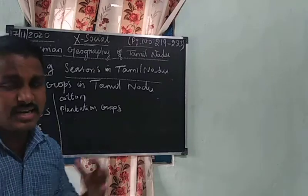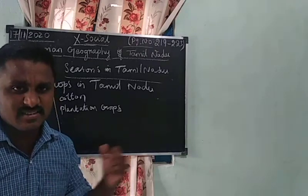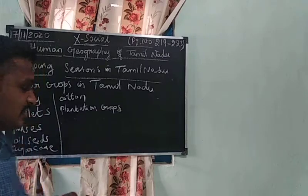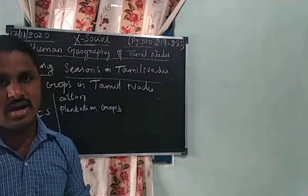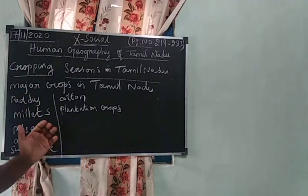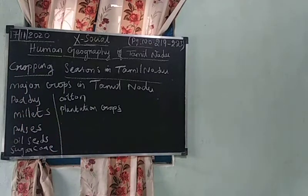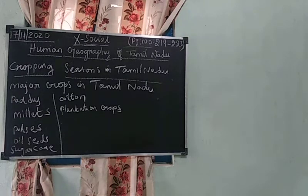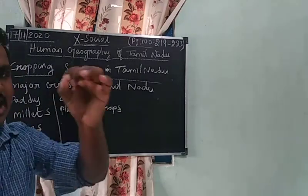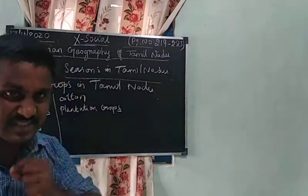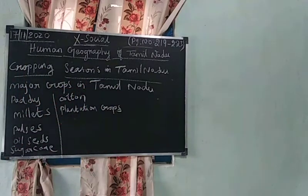Another important crop is millet — such as solam and kambu — cultivated in laterite soil. Next are pulses: bengal gram, black gram, green gram, and horse gram. These are used for domestic as well as commercial purpose.